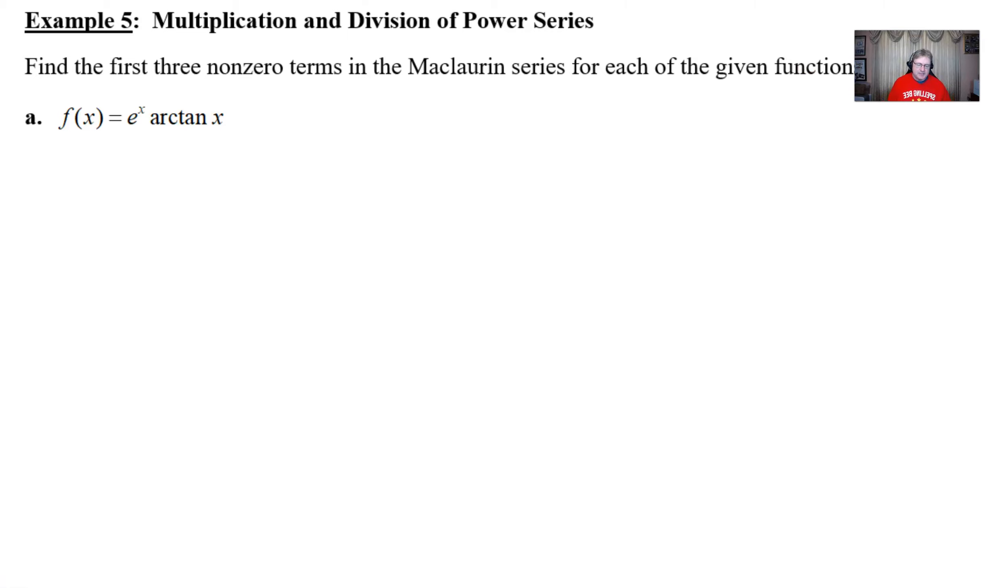I pretty much give you a function here that does not disappoint. It says find the first three non-zero terms of the Maclaurin series for the given function f of x equal e to the x times the arc tan of x.